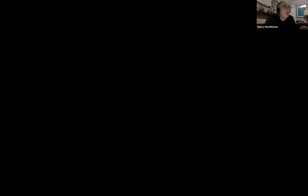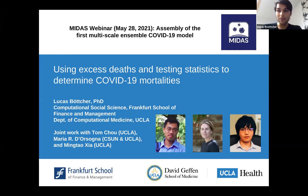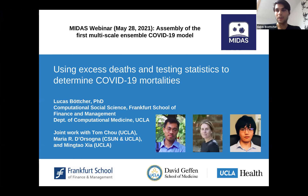Hearing no questions, I want to pass to Lucas Butcher, who is a research scientist at UCLA. I also want to talk — this is a good connection to where Filippo just finished his presentation — because I want to talk about COVID-19 mortality and how one can use combined excess deaths and testing statistics to get better estimates of COVID-19 mortality. Large parts of this work were done in collaboration with Feng Cho, Maria do Sonia, and Ming Tao Xia from UCLA and CSUN.